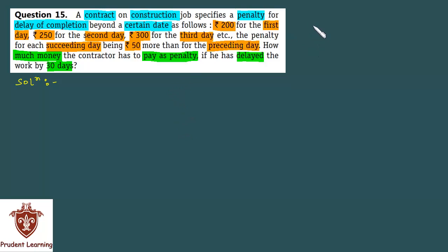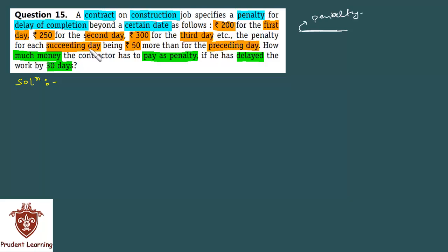किसी contractor को एक construction job दिया गया है, उसको बोला गया है कि किसी fixed date तक construction खतम करके देना है। अगर वो उस date के beyond delay करता है तो उसको penalty pay करना होता है। Penalty इस तरीके से fix है: पहले दिन के delay के लिए 200 rupees, दूसरे दिन के लिए 250 rupees, तीसरे दिन के लिए 300 rupees, and so on। हर succeeding day के लिए पिछले दिन से 50 rupees ज्यादा pay करना है। आपको बताना है कि अगर contractor ने 30 days का delay किया तो उसको कितना penalty pay करना होगा।